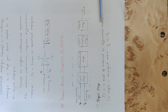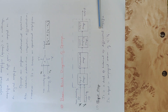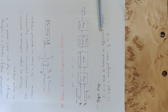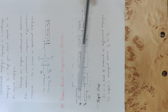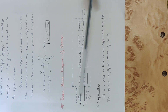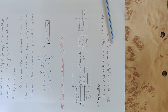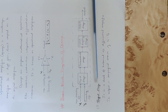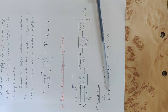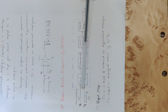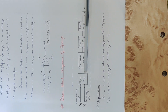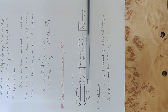The differential amplifier gives the difference of the two inputs as the output. It produces an amplified version of V1 minus V2. This is a dual input, balanced output differential amplifier, forming the input stage.